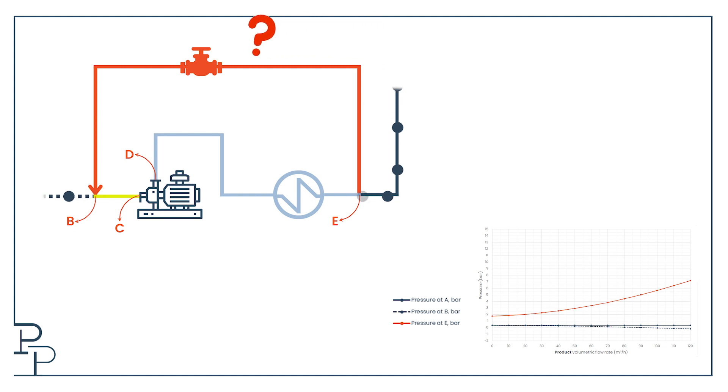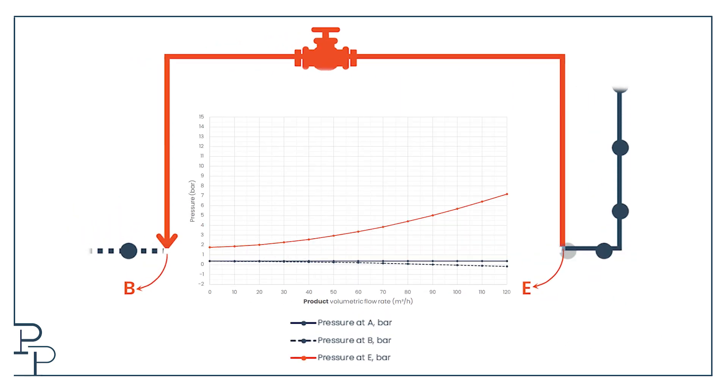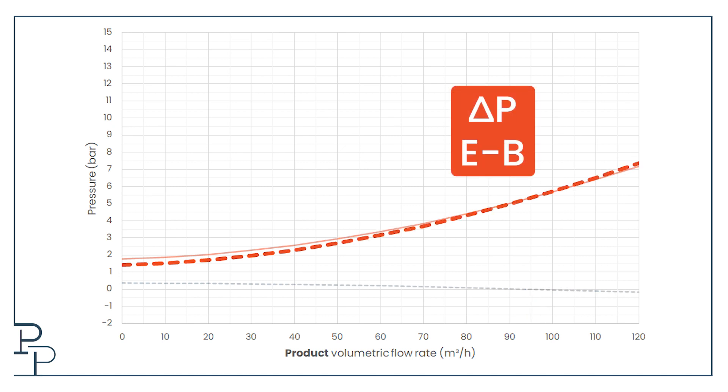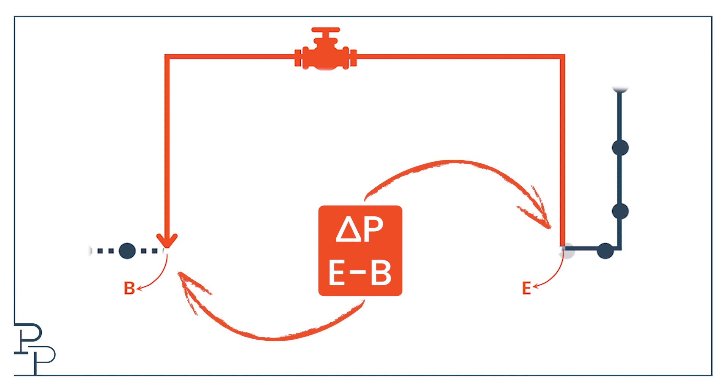But now look at what's happened. I may not know what the recycle flow rate is, but I have a curve describing the pressure at B and I have another curve describing the pressure at E. That means I know the pressure drop between E and B by subtracting one from the other. But understand, this isn't the system curve for EB because I'm not plotting it against the recycle flow. I'm plotting it against the product flow. I am plotting the pressure drop in the recycle line as a function of a flow that doesn't even go into the recycle line. However, that other flow does dictate the pressures on either side of the recycle.